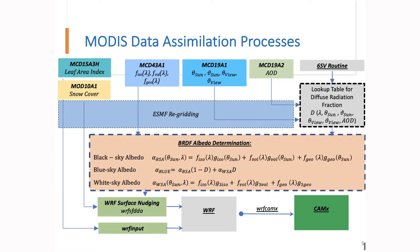Except for the MODIS LAI — due to its 4-day composite temporal resolution — which we use to replace the original climatological seasonal LAI values in WAF input files, the other MODIS-derived quantities are incorporated into the WAF land-surface energy model before entering the WAF core model. After that, the WAF-CAMX processor is used to process WAF outputs and prepare meteorology input for the CAMX model.